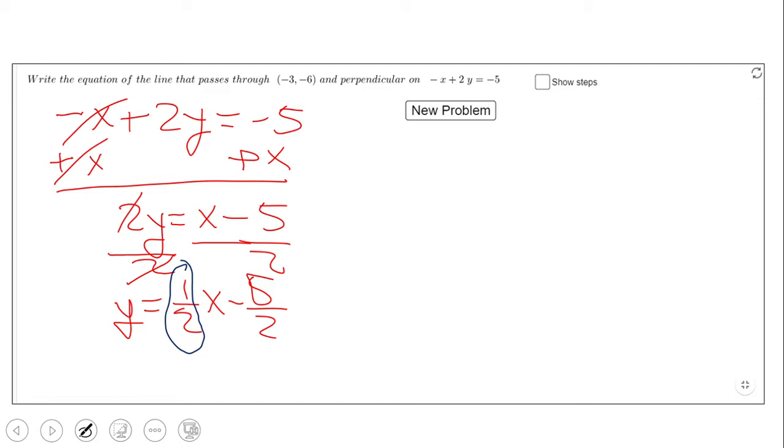So the slope of the second line, the one we're looking for, is the negative reciprocal, which means flip and change. The slope of the second line is -2. Simplify if possible.